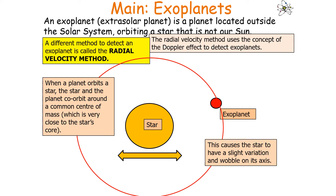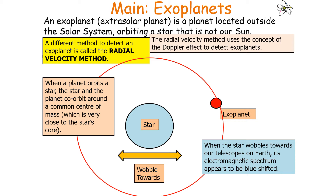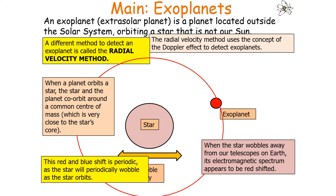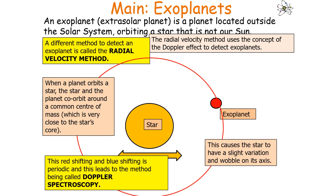From Earth, when the star wobbles towards us, our telescopes will observe its electromagnetic radiation being blue shifted. Whilst when the star is wobbling away from our telescopes, its electromagnetic spectrum appears red shifted. This red shift and blue shift is periodic as the star periodically wobbles, leading to a method called Doppler spectroscopy.